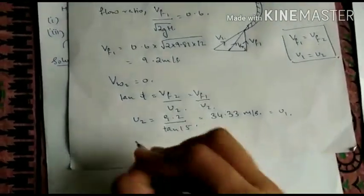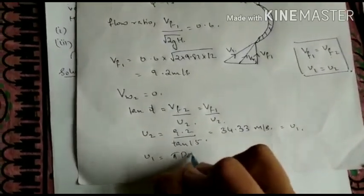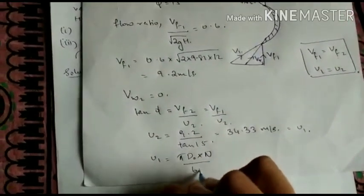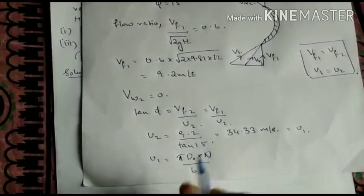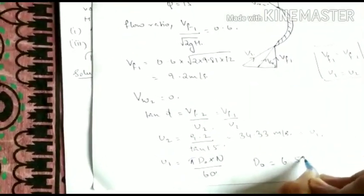Now from the relation U1 is equal to pi D0 into N by 60. From this everything is given except D0. So we can find D0. From this we will get it as 6.55 meters.